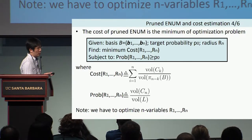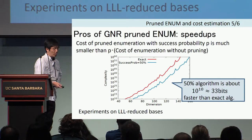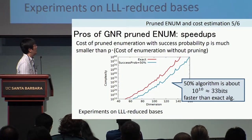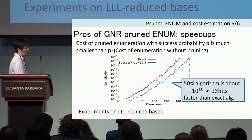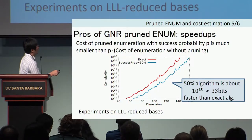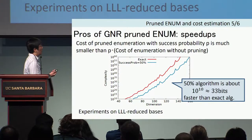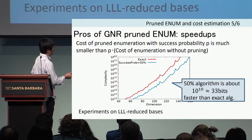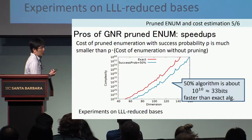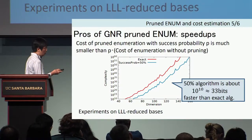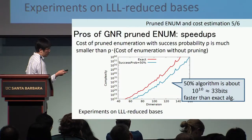This is not an easy problem, but the pruning strategy is very effective. For example, taking 50% success probability, the speedup factor is about 10^10. This is much faster than the exact algorithm, which is the advantage of the GNR strategy.